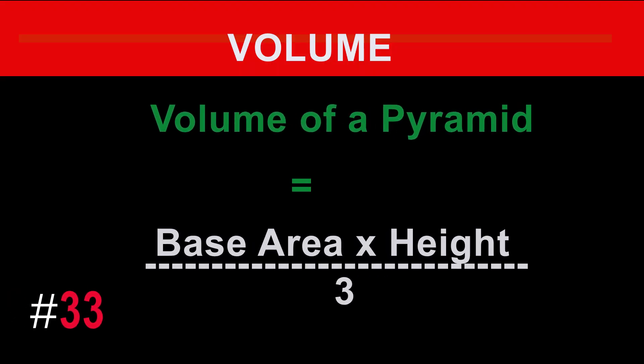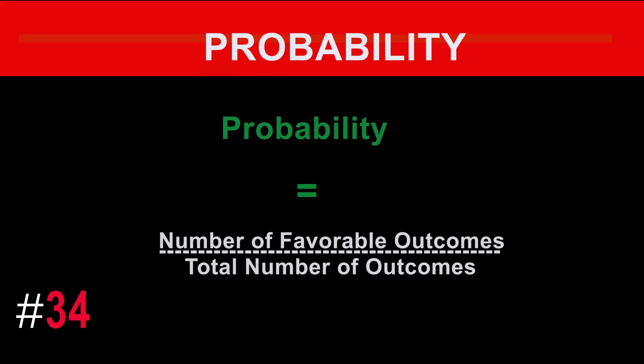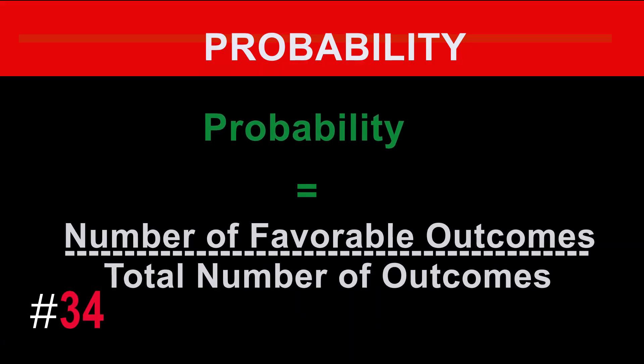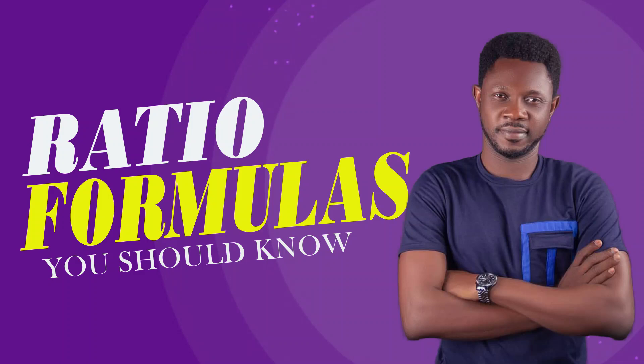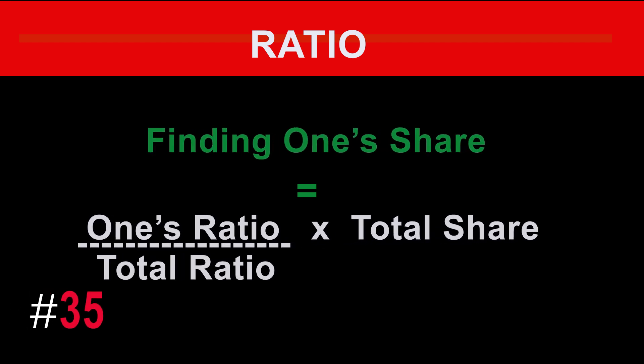The formula for the volume of a pyramid is: volume equals base area times height divided by 3. The formula for probability is: probability equals the number of favorable outcomes divided by the total number of outcomes. Finding one's share equals one's ratio divided by total ratio, times total share.